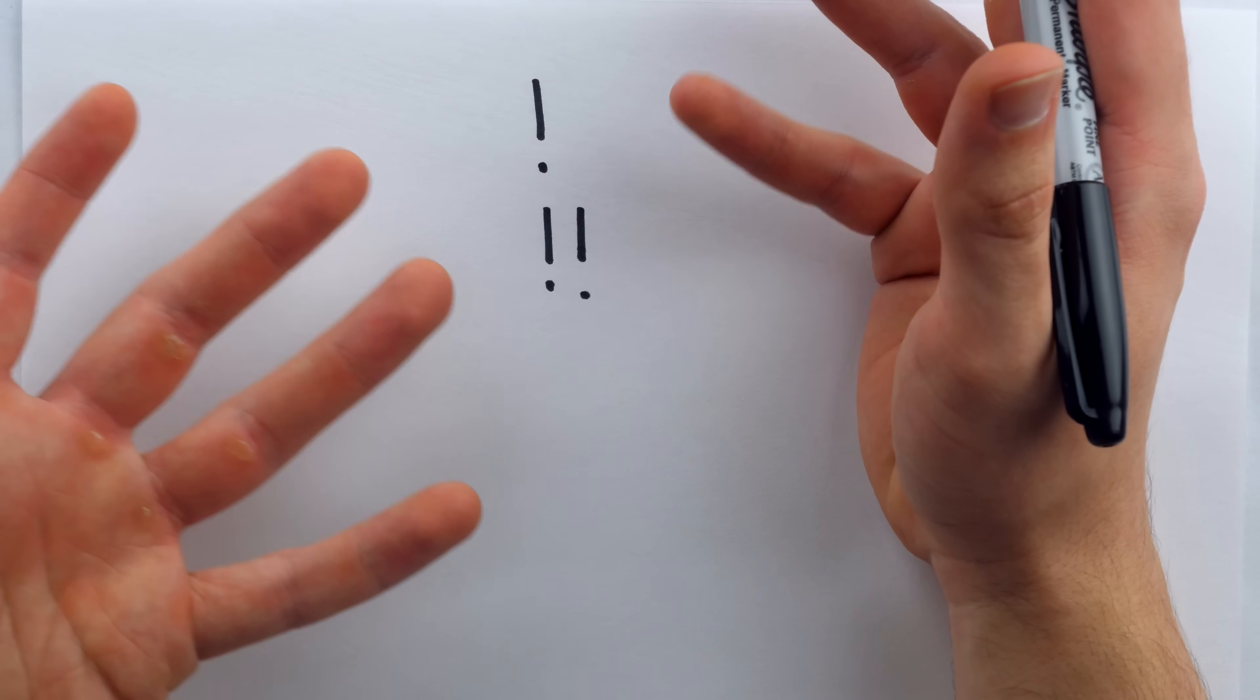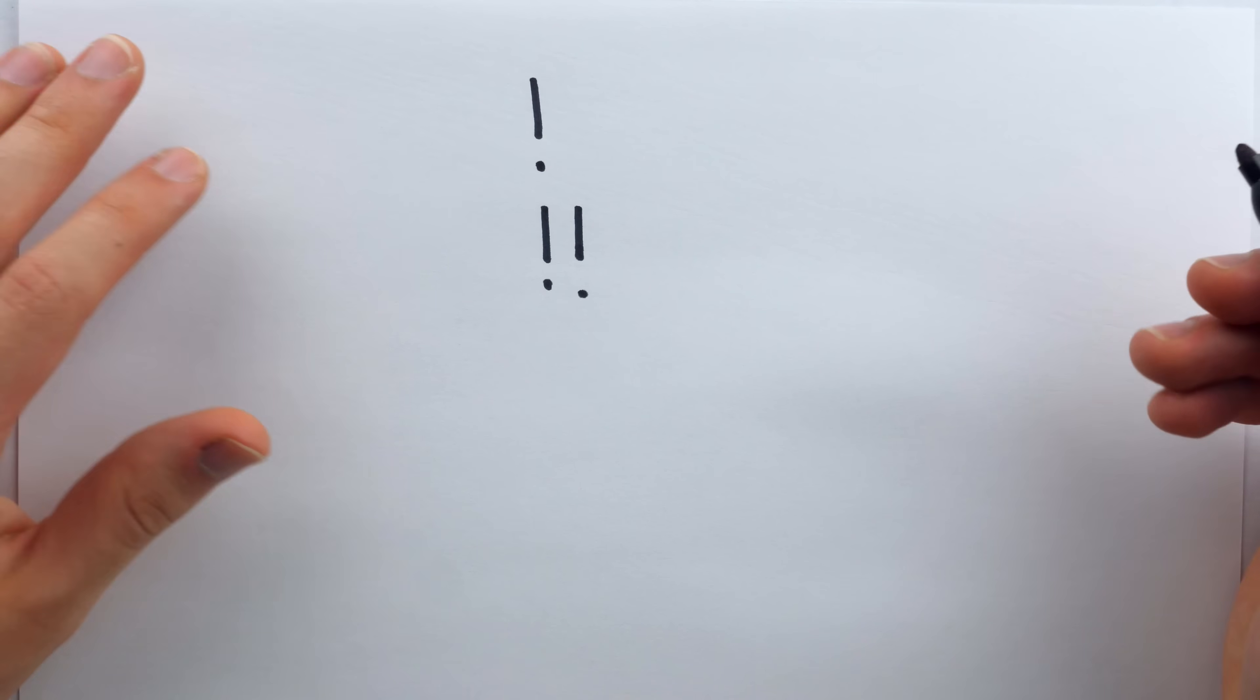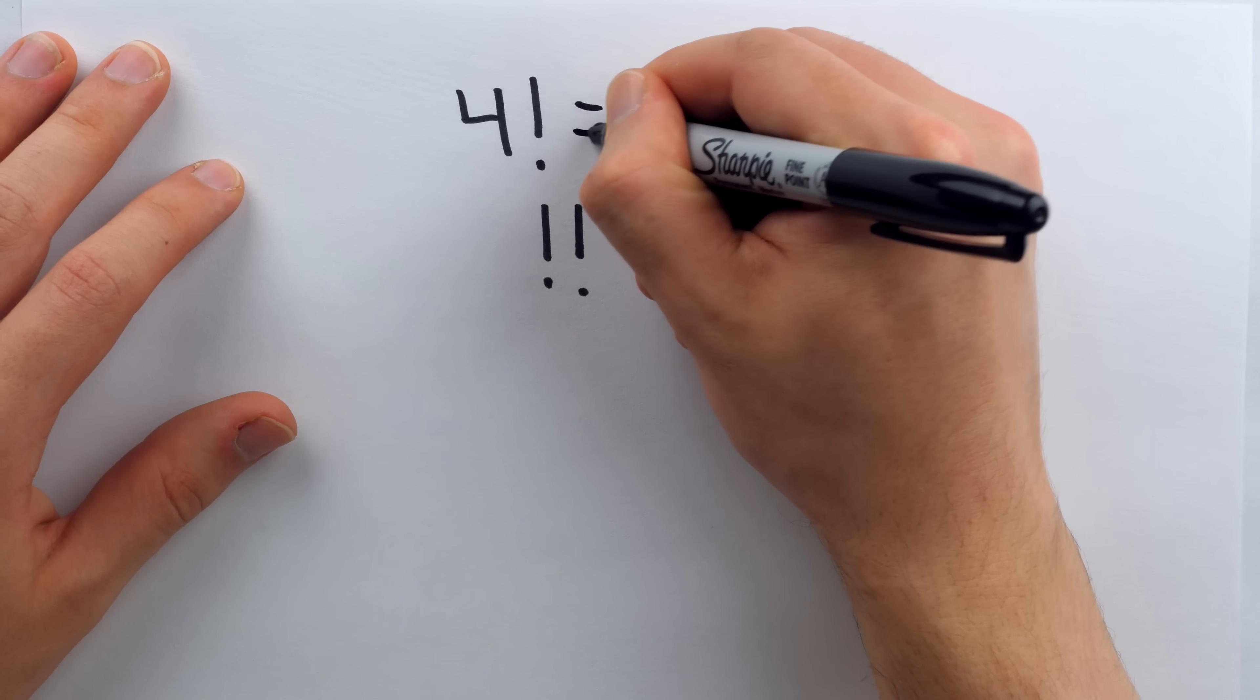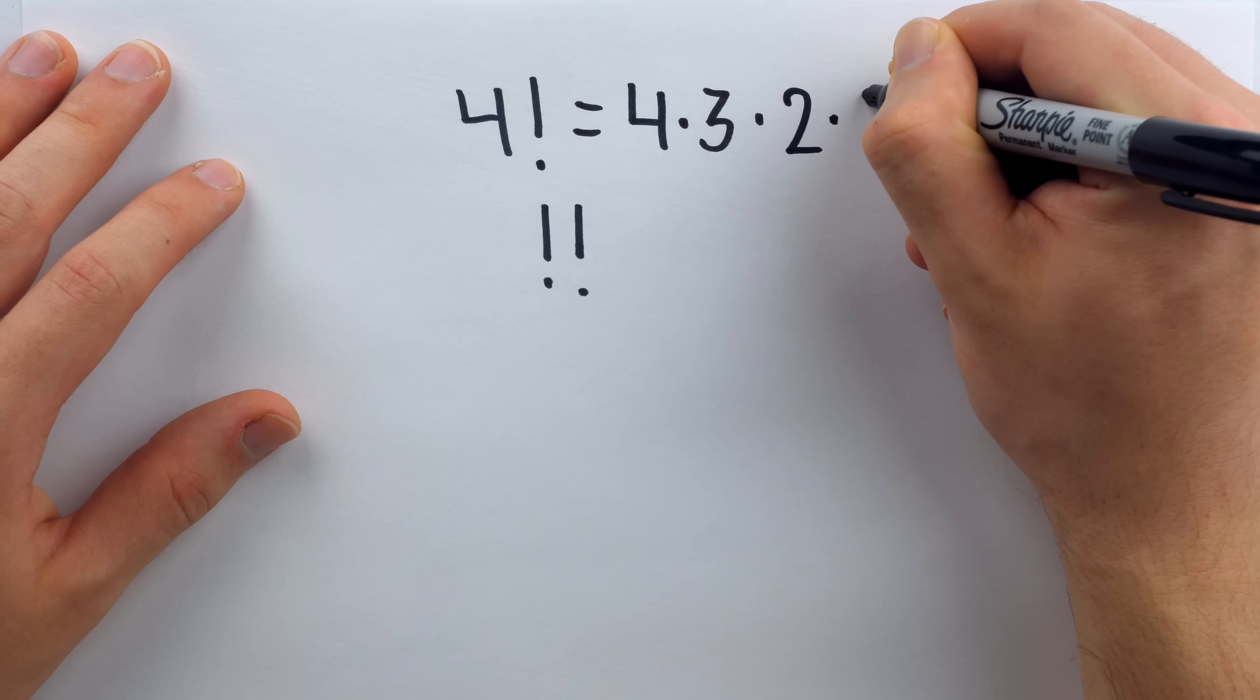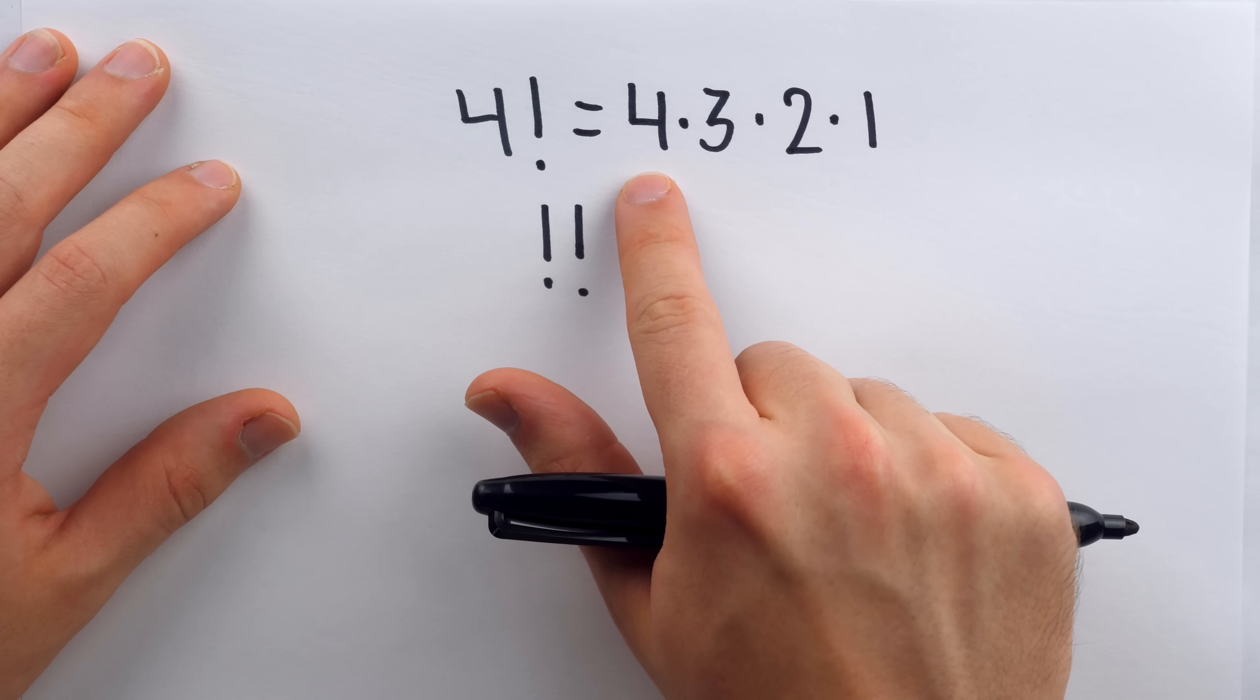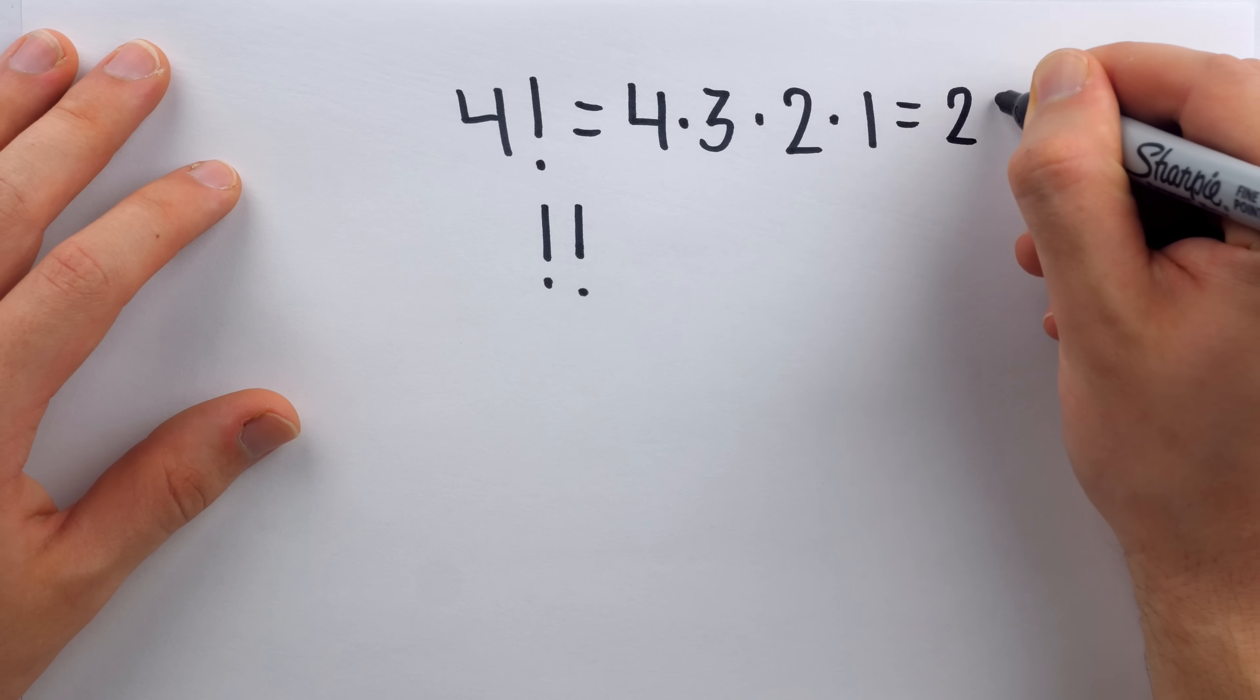This first symbol, the exclamation point, mathematicians might call it the bang symbol. It is of course the factorial, which is pretty well known. If you haven't seen it before, for an example, 4 factorial is equal to 4 times 3 times 2 times 1. So you take the factorial of a positive integer and what that equals is just the product of the integer times all the integers less than it down to 1. Of course, this happens to equal 24.